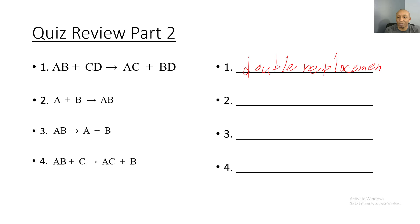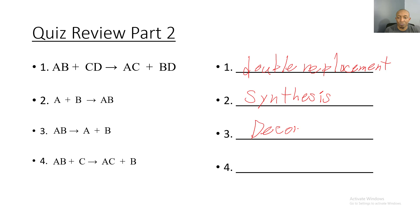Next: A plus B yields AB — they were apart but now they're together like a marriage, so this is a synthesis reaction. Then AB yields A plus B — they were together and broke apart much like a divorce, so this is a decomposition reaction. And last: AB plus C yields AC plus B — B got replaced with C and that's the only thing replaced, so this is a single replacement reaction.